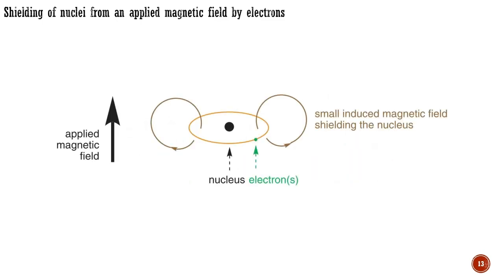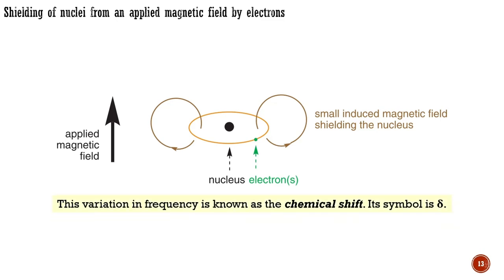Each nucleus is surrounded by electrons, and in a magnetic field these will set up a tiny electric current. This current will set up its own magnetic field — rather like the magnetic field set up by electrons moving through a coil of wire — which will oppose the magnetic field that we apply. The electrons are said to shield the nucleus from the external magnetic field. If the electron distribution varies from carbon atom to carbon atom, so does the local magnetic field experienced by its nucleus, and so does the corresponding resonating frequency. This variation in frequency is known as the chemical shift, and its symbol is the Greek letter delta.